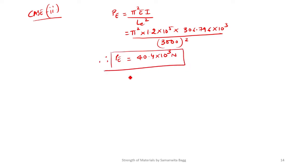The safe load by Euler's formula is PS = PE / FOS = 40.4 into 10³ / 2 = 20.2 kN.